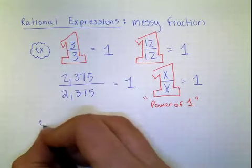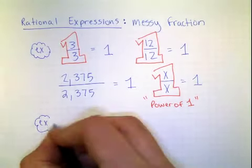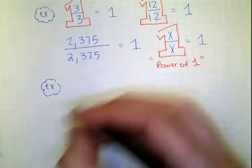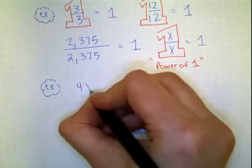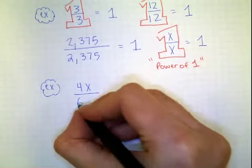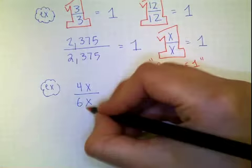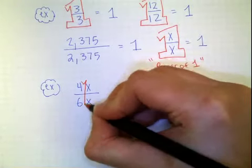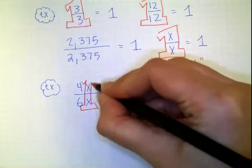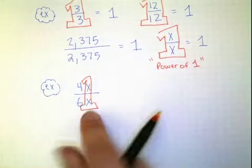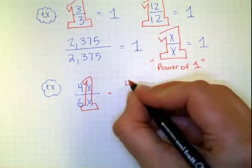So to give you kind of a different example here, let's say you had something like 4x over 6x. Right away when I see this problem, I see a power of 1. The x is. And you can draw a big 1 around them. Or if you want, you can just circle them. I'm probably just going to circle them from now on. But you see them right there. So really, I just have 4 over 6.